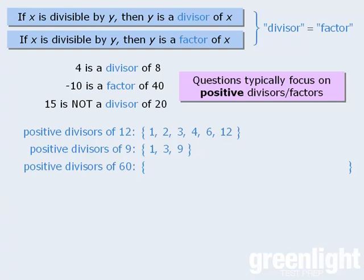Well, let's list them. Now a useful way to avoid missing divisors is to list them in pairs. By pairs, I mean two integers that have a product of 60. So we'll begin with 1 and work our way up to 60. Since 1 times 60 equals 60, we know that 60 is another divisor.